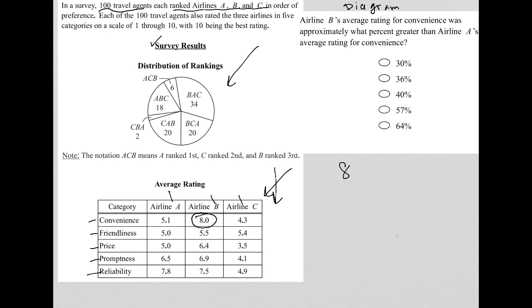Was approximately what percent greater than airline A's average rating for convenience. So this is B. Airline A's average rating for convenience is 5.1. So A is 5.1.